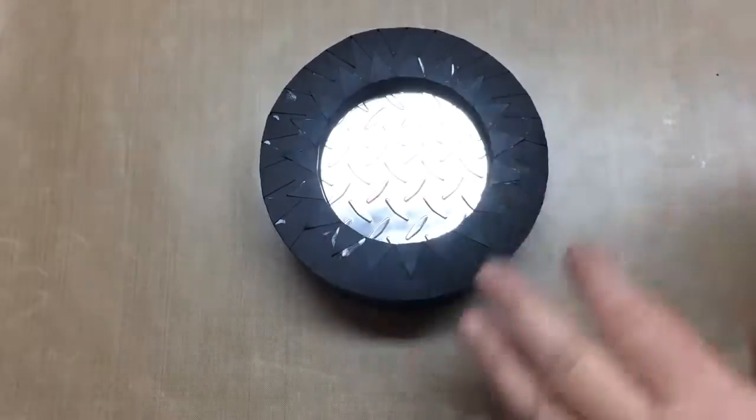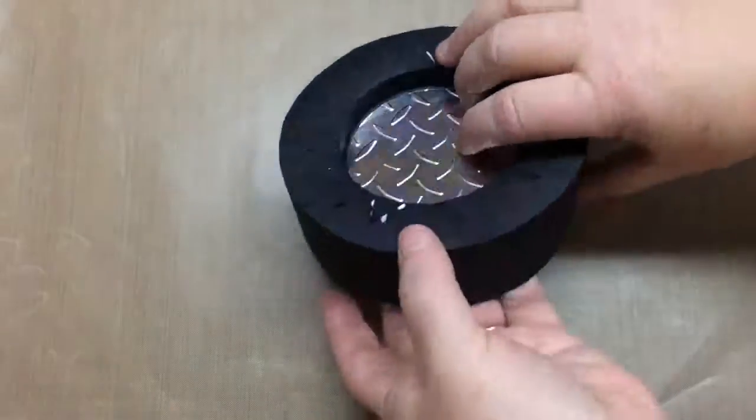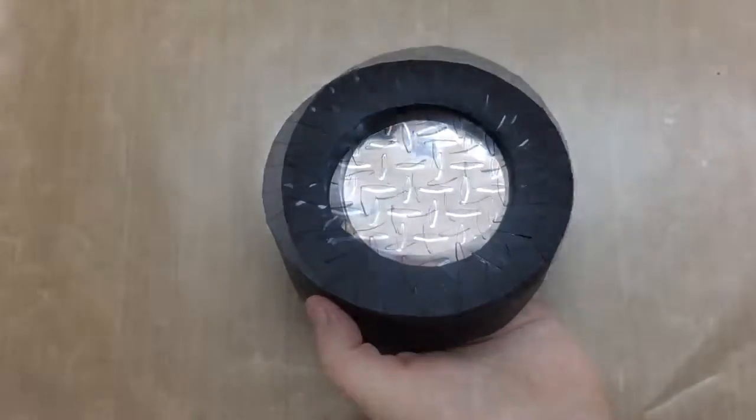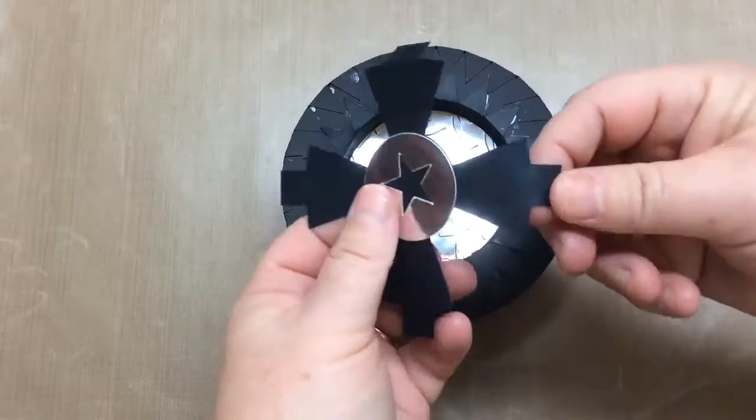So next we'll add the hubcap portion or the wheel portion, so the inside panel first as shown and then the little hubcap.